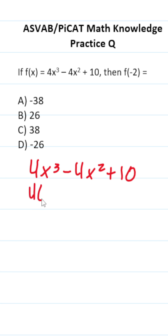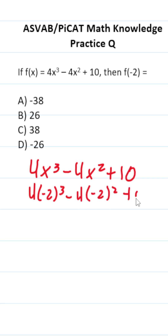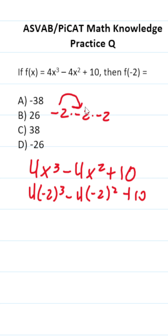This becomes 4 times negative 2 to the third, minus 4 times negative 2 squared, plus 10. Let's work this out. Negative 2 to the third is the same as negative 2 multiplied by itself three times. Negative 2 times negative 2 is positive 4, and positive 4 times negative 2 is negative 8.